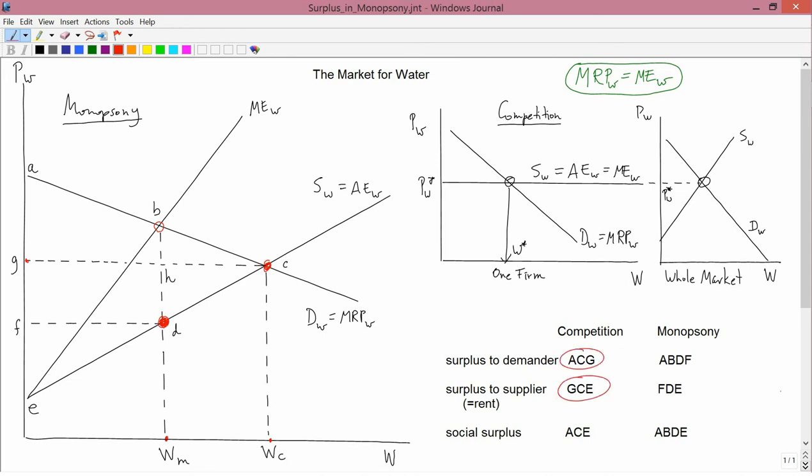Now let's get the next one, the surplus to supplier. That's the area above the supply curve and below the price line. So the supply curve is EC, the price line is GC. So the surplus to the supplier is GCE.